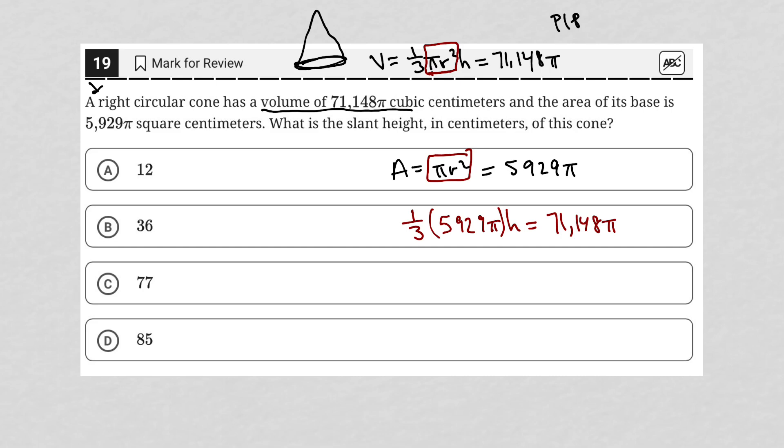So the slant height, what is the slant height? The height here is not the slant height. A typical height is going to be vertical, right? So the height of a cone would be a line vertically straight down from the top of that cone to the middle of its base, so that's the height.